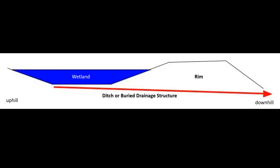A wetland is drained by digging a ditch that carries water downhill. Because natural wetlands have a rim around the lower edge, the ditch must cut through that rim. Ditches can be left open or filled with soil if a drainage structure is buried at the bottom of the ditch.